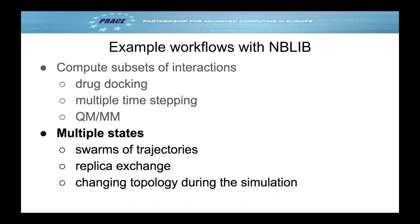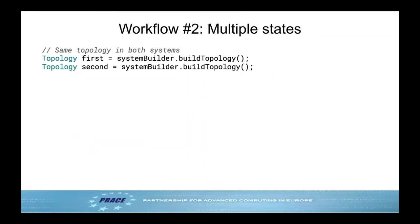The second workflow category involves multiple states. This encompasses swarms of trajectories or replica exchange. You build the same topology twice — call them 'first' and 'second' — and give each its own coordinates and velocities, which could be the same or different depending on your use case.